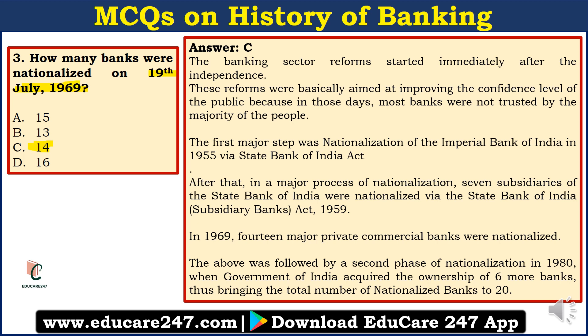In India, banking sector reforms started immediately after independence. These reforms were aimed at improving public confidence, as most banks were not trusted by the majority of the public in those days. The first major step was the nationalization of the Imperial Bank of India in 1955 via the State Bank of India Act. After that, seven subsidiaries of the State Bank of India were also nationalized.